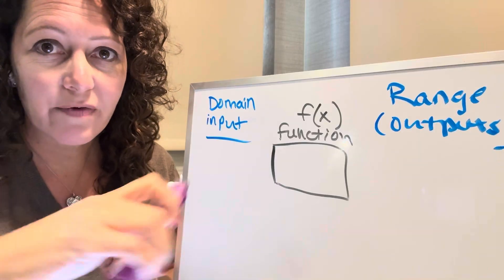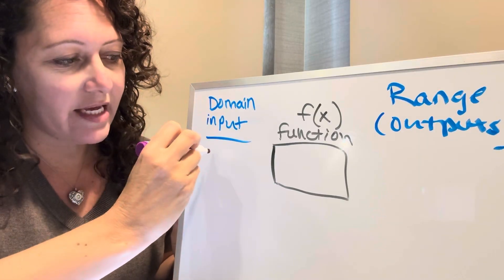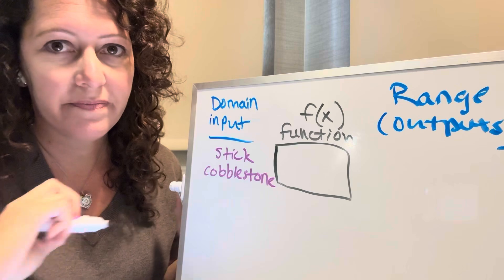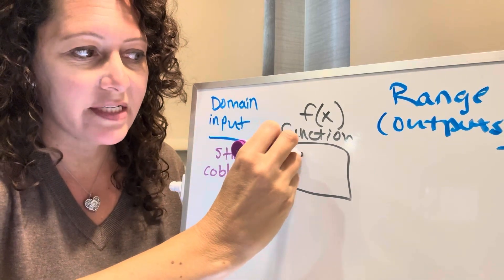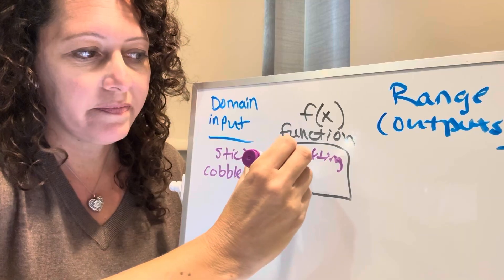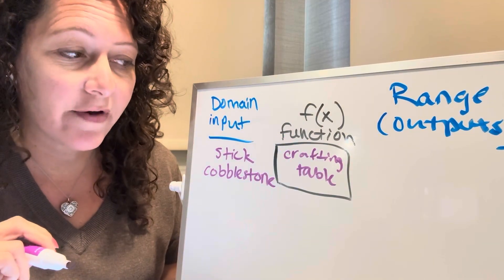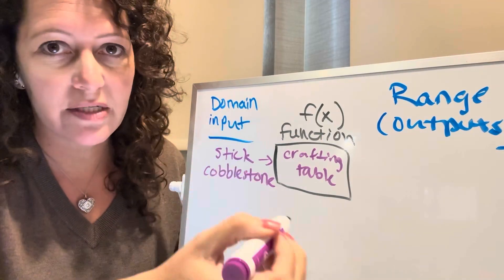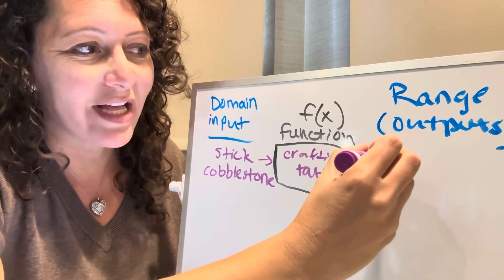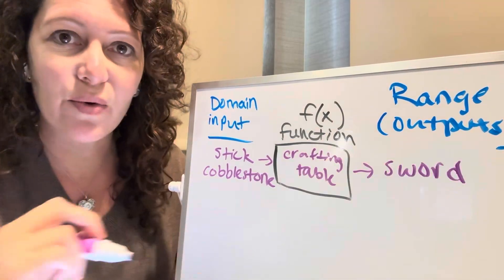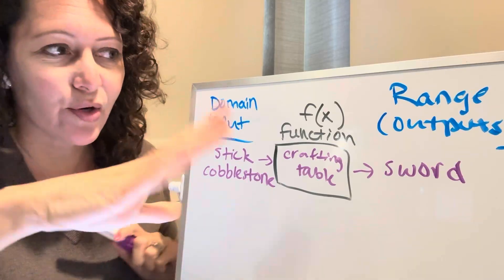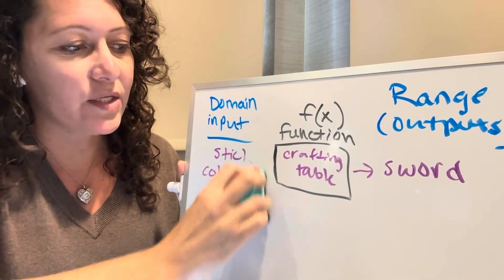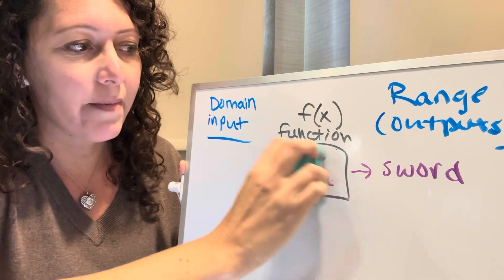So in the example for Minecraft, if I took a stick and some cobblestone and I put it into my crafting table, so my crafting table is acting like my function. What did that crafting table do to the stick and cobblestone? What is it going to give out? And I would imagine most of the kids in your class are going to be able to tell you, that's going to give you a sword. I don't play Minecraft, so I don't know a lot of other examples, but you might have a few and they can go through a few just to show that they understand how a function works.